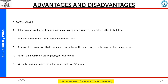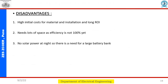In this slide we see some disadvantages of solar energy. The first is high initial costs for materials and installation, with a long return on investment. It requires a lot of space since efficiency is not yet 100%. There is no solar power generated at night, creating the need for a large battery bank.